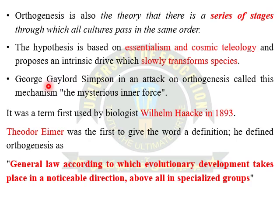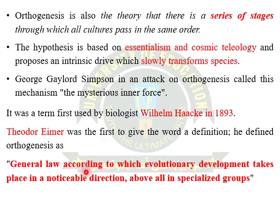A famous scientist, George Gaylord Simpson, called orthogenesis a mechanism that is the mysterious inner force of an organism. The term orthogenesis was first used by biologist Wilhelm Haeckel in 1893. Theodor Eimer first introduced a definition, stating there is a general law according to which evolutionary development takes place in an unnoticeable direction, especially in specialized groups.